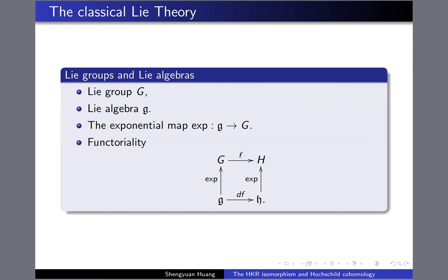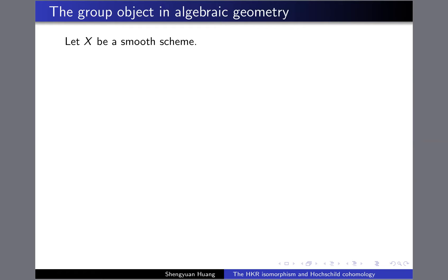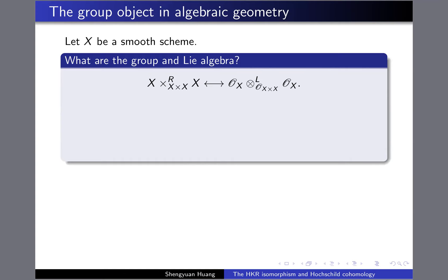In the story of Hochschild homology in algebraic geometry, what is the group and what is the Lie algebra? The group object is this scheme, which controls the Hochschild homology and cohomology — you can get everything about the Hochschild homology and cohomology from this scheme.